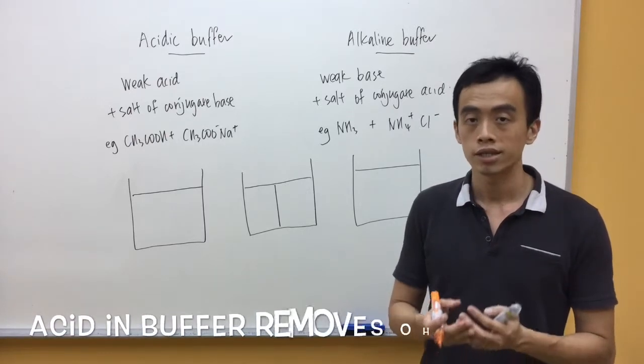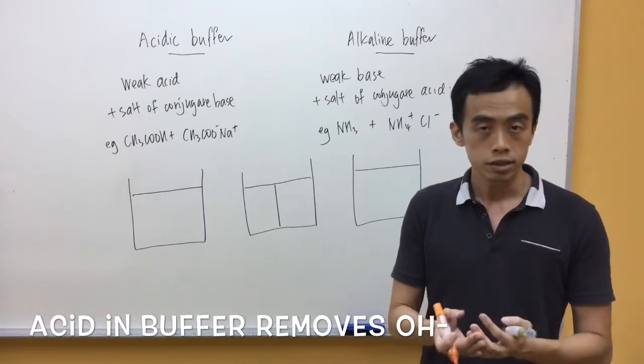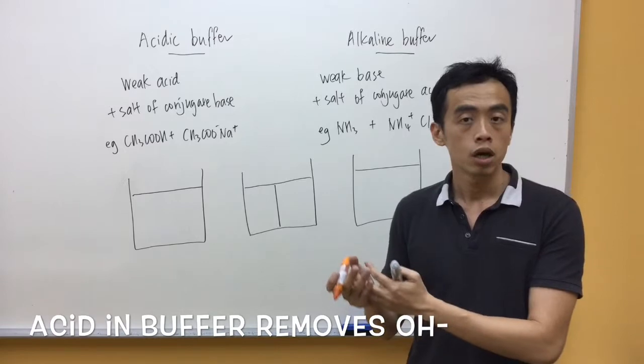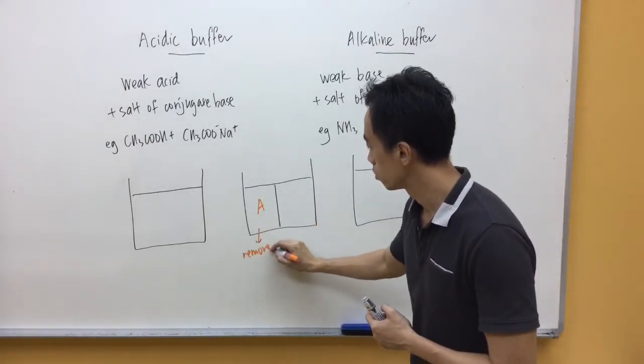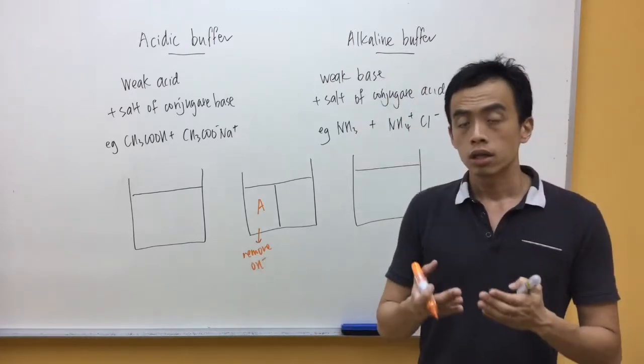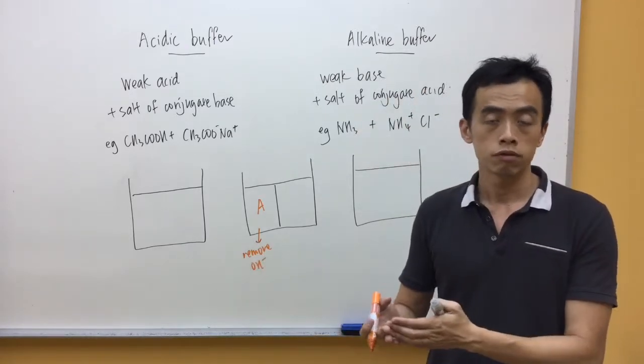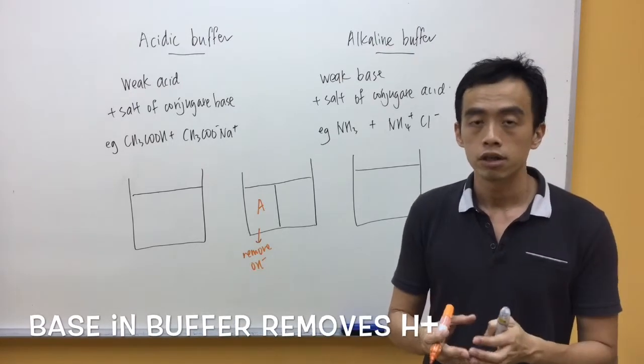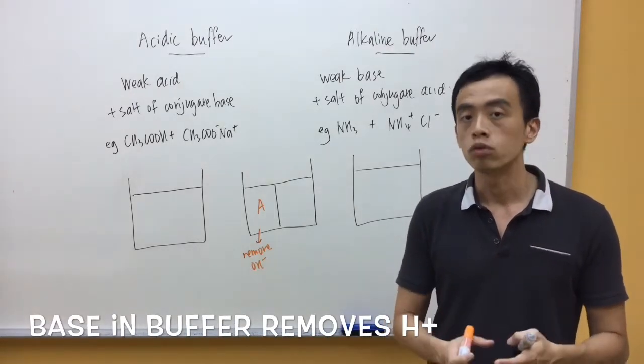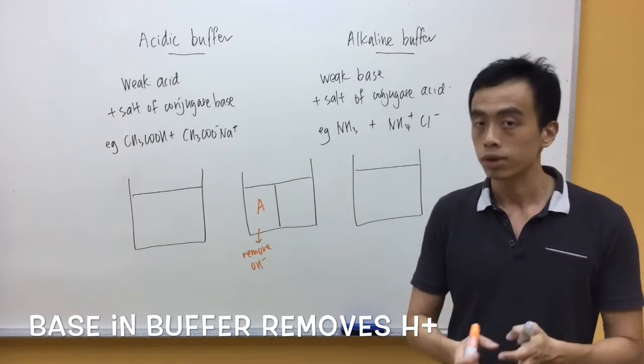What this means is a buffer is essentially a mixture. Inside this mixture, there's an acid. This acid is responsible for removing OH- when it's added to this buffer. And because the buffer is also capable of maintaining pH when H+ is added, inside this buffer there must be a base that can remove H+.